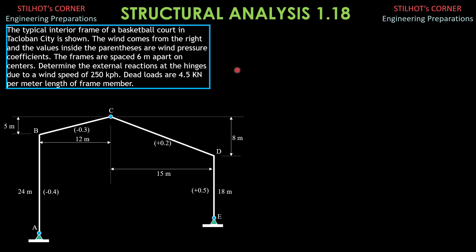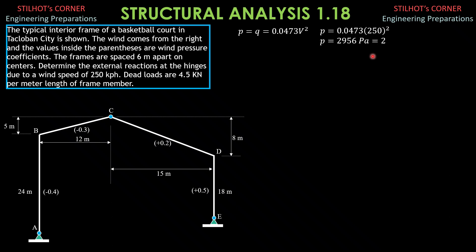First, let's compute the wind pressure, which is equal to 0.0473 times velocity squared, where velocity is in kilometers per hour and the resulting pressure is in pascals. So, pressure Q equals 0.0473V². Pressure equals 0.0473 times 250 squared, and it is equal to 2956 pascals or 2.956 kilopascals.